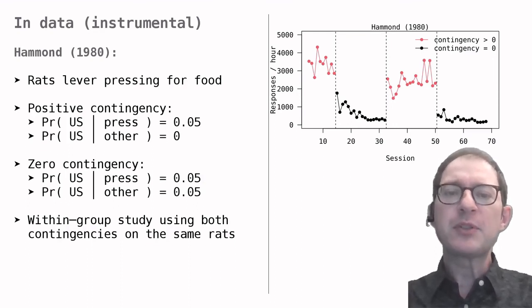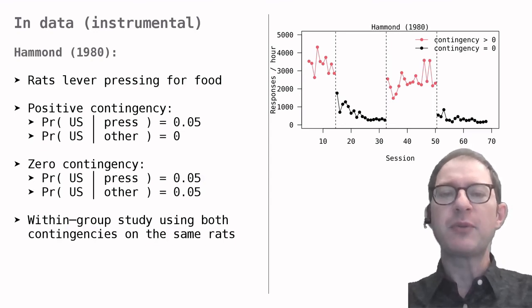After a few days, Hammond switched the rats to a zero contingency. Lever presses were still rewarded with 5% probability, but in addition, food was also delivered without pressing with the same probability. The result was that the rats stopped pressing the lever almost completely, over the course of a few days. This is the second part of the graph, in black.